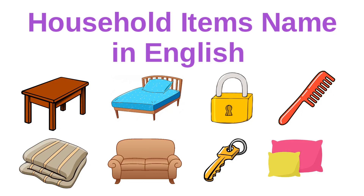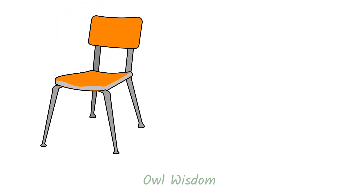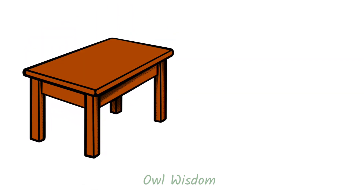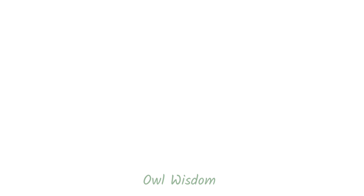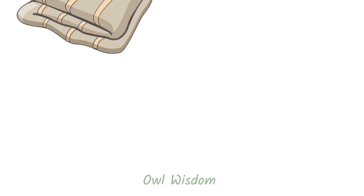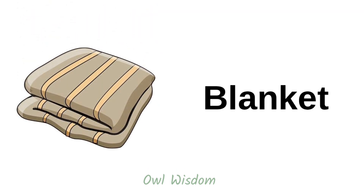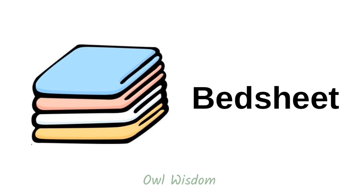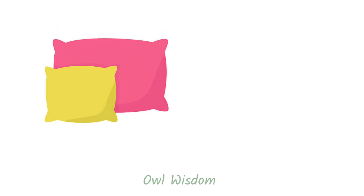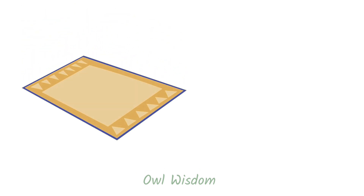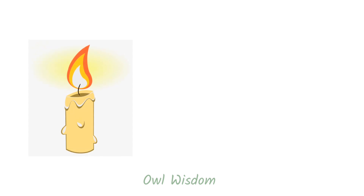Household items name in English. This is chair. This is table. This is bed. This is blanket. This is bed sheet. This is pillow. This is carpet. This is candle.